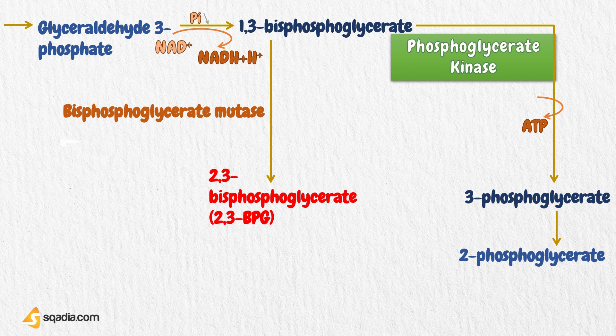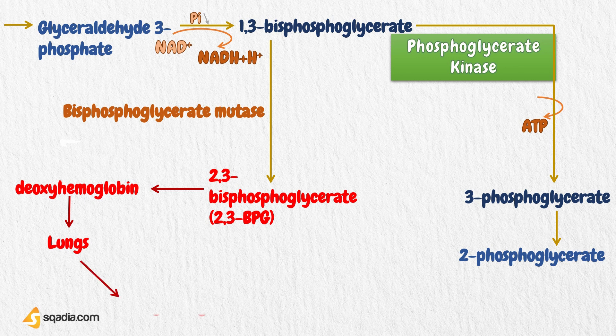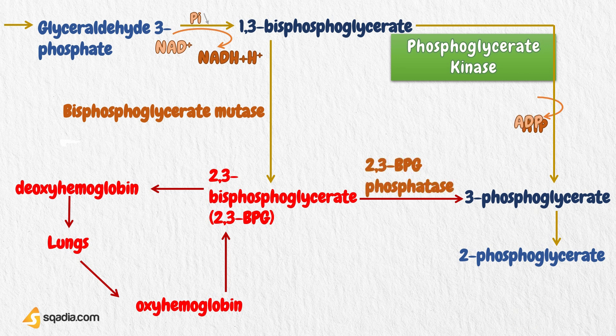This 2,3-BPG has a greater affinity for binding with deoxyhemoglobin, stabilizing its structure and preventing it from binding another oxygen molecule from adjacent oxyhemoglobin molecules. The red blood cells then transport deoxyhemoglobin and its cargo of carbon dioxide to the lungs, where the partial pressure of oxygen is greater than that of carbon dioxide. The carbon dioxide is released into the air by breathing, and oxygen binds with hemoglobin to form oxyhemoglobin, releasing 2,3-BPG, which is then converted to 3-phosphoglycerate by bisphosphoglycerate phosphatase.